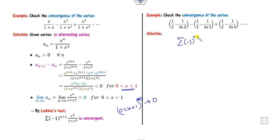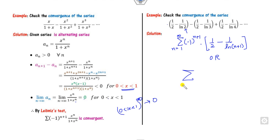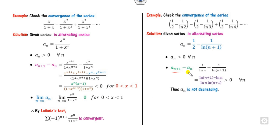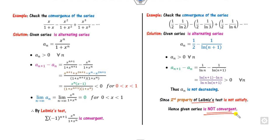For this series, I write the nth term as (-1)^(n+1) times 1/(2·ln(n)), starting from n=2. a_n = 1/(2·ln(n)) is clearly a positive number. Computing a_{n+1} minus a_n is always greater than 0, meaning the sequence is not decreasing. Since the second property is not satisfied, the series is not convergent.